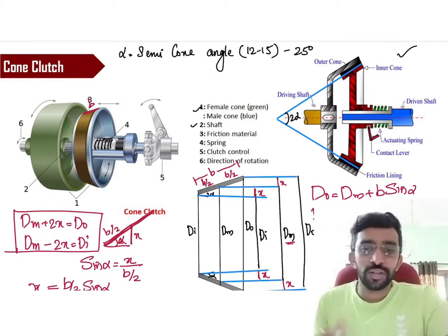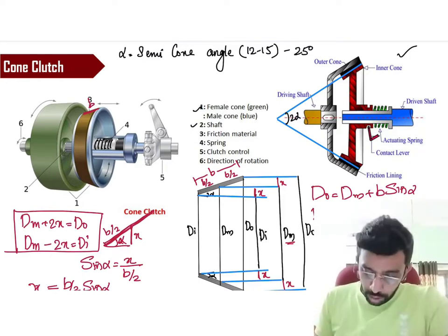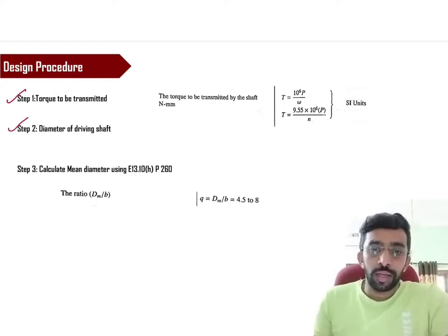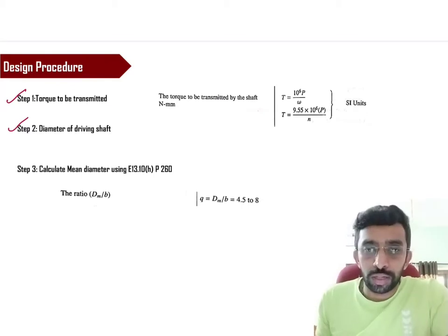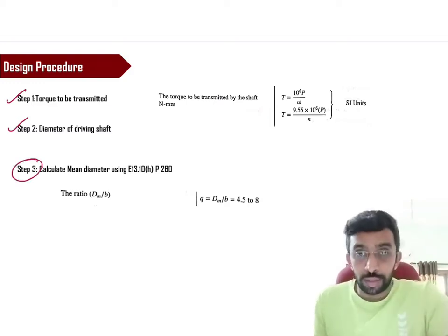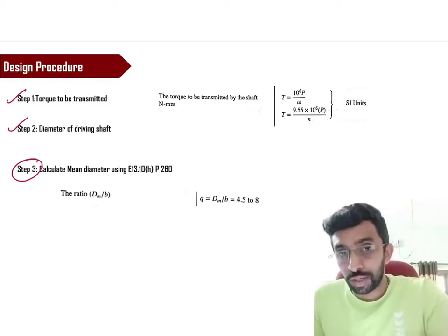This relation is not given in the data handbook. You have to manually do it. That's the reason why I have explained this. Now, let's move forward and see how the design is being carried out. The initial two steps are one of the same, where you have to calculate the torque transmitted and the diameter of the shaft. If you have any confusion in these two steps, kindly refer back to the design procedure for the single plate and multi-plate clutch. And step number three is very important because that is a completely different step when compared to the previous design procedures.